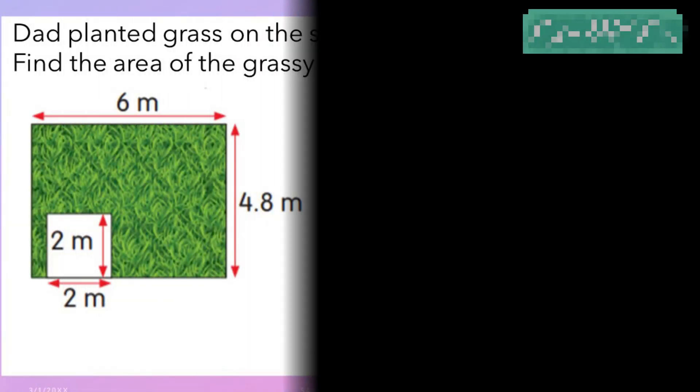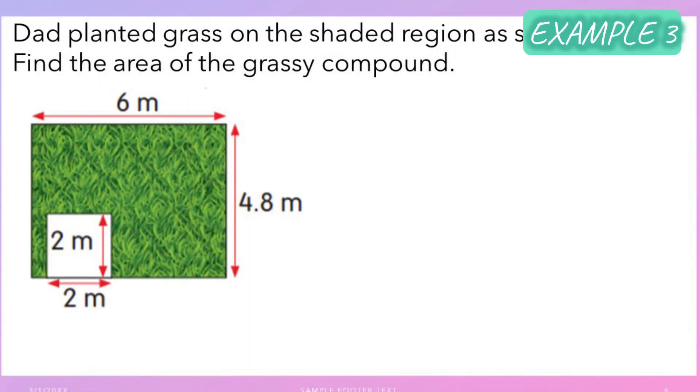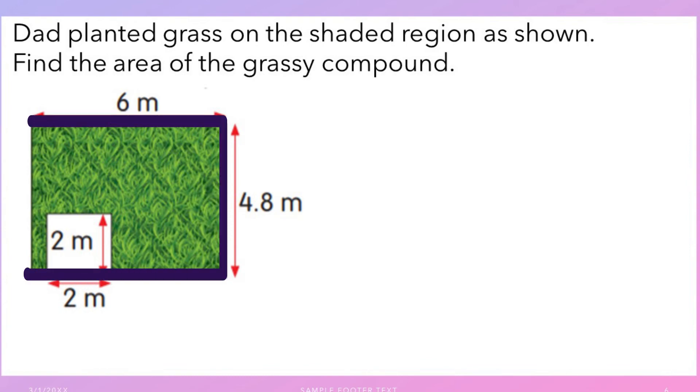Now, example 3. Dad planted grass on the shaded region as shown. Find the area of the grassy compound. To find the area of the grassy compound, we need to find the area of the rectangle, then minus the area of the square.